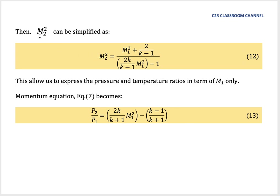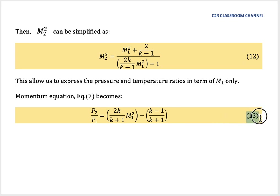We can then simplify to express M₂² as: M₂² = [M₁² + 2/(K−1)] / [2K/(K−1) × M₁² − 1]. This allows us to express the pressure and temperature ratios in terms of M₁ only. The momentum equation (equation 7) can then be written as equation 13: P₂/P₁ = [K/(K+1)]M₁² − (K−1)/(K+1).